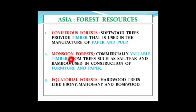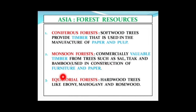The timber from monsoon forests is very valuable because it is durable hardwood and can be used to make furniture as well as paper. Equatorial forests have hardwood trees like ebony, mahogany and rosewood, which are also commercially very valuable, expensive, and in high demand. They are used extensively for making several items.